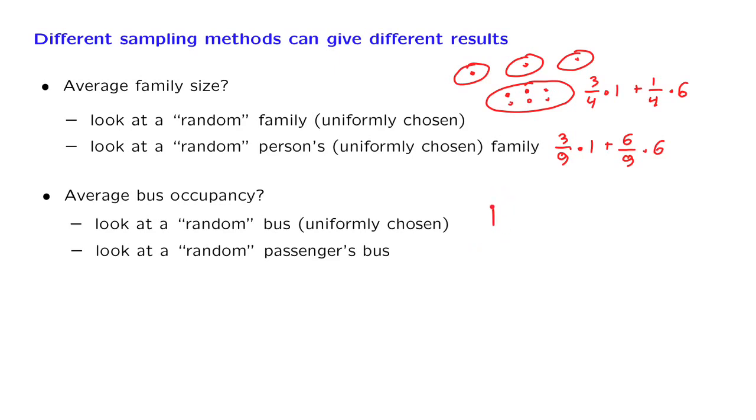Suppose that half of the buses have zero people in them and half of the buses have fifty people in them. If you look at random buses, then the average occupancy would be twenty-five. But if you ask passengers, all of the passengers would report fifty. And it would be, again, a different answer.